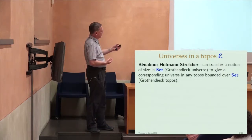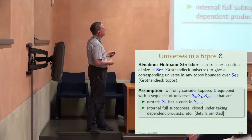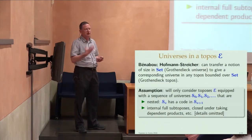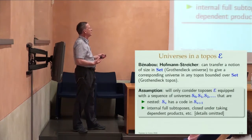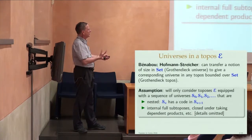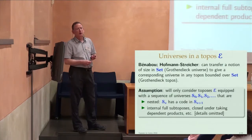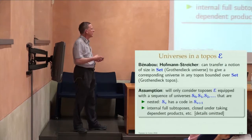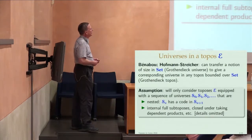I'm going to be working not in Grothendieck toposes but generally in an elementary topos. But it is crucial that the elementary topos comes with a reasonably rich notion of different sizes. I'm going to assume throughout that we're talking about an elementary topos that comes with a sequence of internal universes — these S's are nested in the sense that the universe at level N has a code in the universe at level N+1, and the universe objects are closed under pretty much everything one might want from a topos-theoretic point of view.